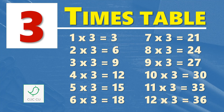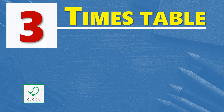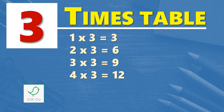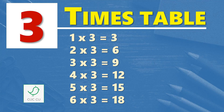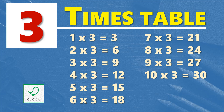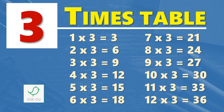Multiplication table of 3. 3 times table. 1 times 3 is 3, 2 times 3 is 6, 3 times 3 is 9, 4 times 3 is 12, 5 times 3 is 15, 6 times 3 is 18, 7 times 3 is 21, 8 times 3 is 24, 9 times 3 is 27, 10 times 3 is 30, 11 times 3 is 33, 12 times 3 is 36.